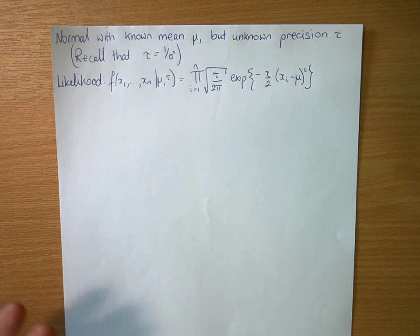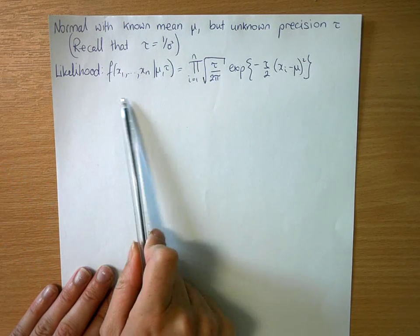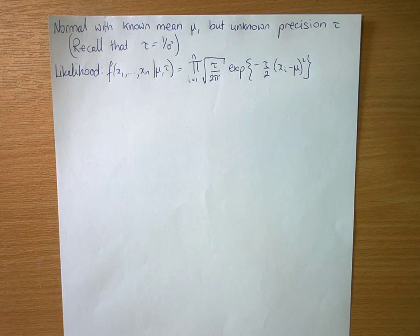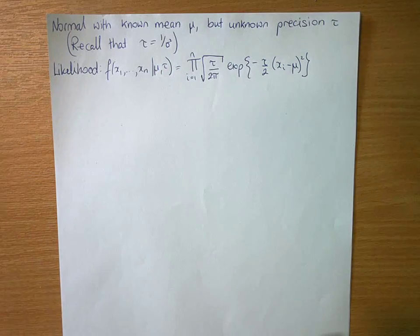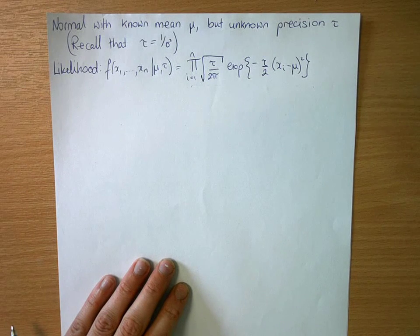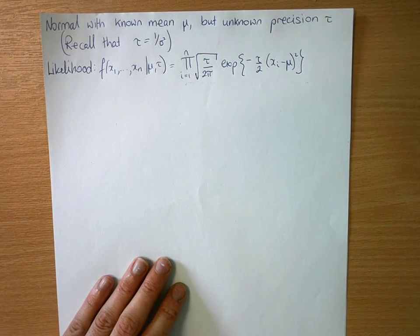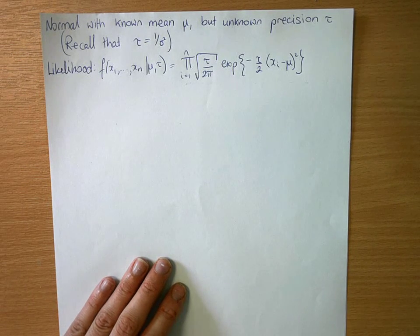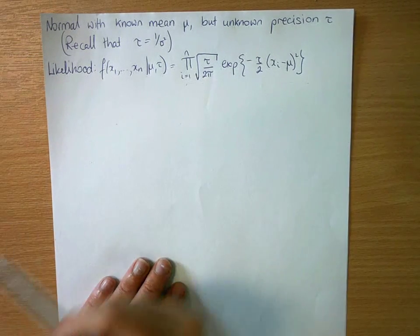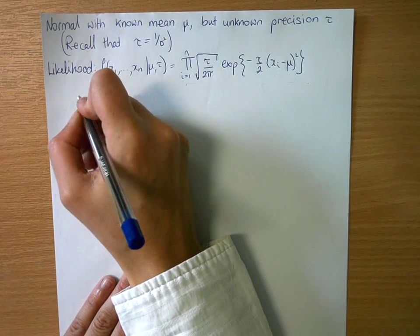So if we write out our likelihood of observing data, n data points from such a distribution with some parameter mean mu and tau for our precision, we would write it in this form. First of all, we need to think that tau will be our random variable of interest at the end. So we want to think in terms of tau. We want to separate this out as much as possible in terms of thinking about tau.